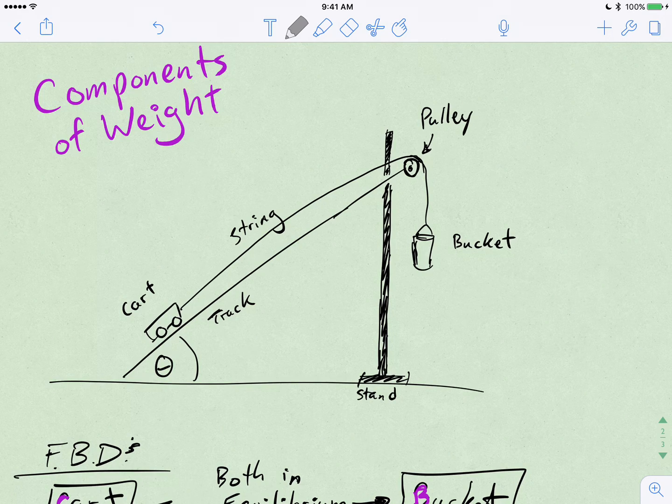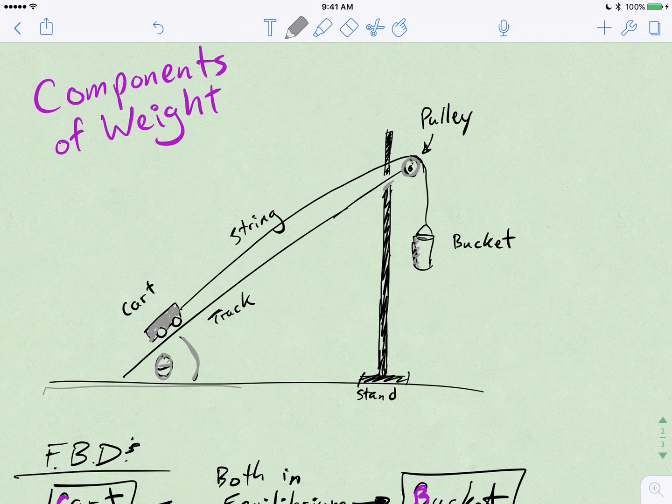Imagine you have this cart sitting here on an angled track, and we've got a string tied to it running over a pulley up here at the top, and then there's a bucket hanging from the pulley. We've got the track attached to a stand here sitting vertically, and then we've got this angle theta that the track is making with our lab bench that's running horizontally there. That's our situation.